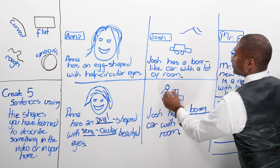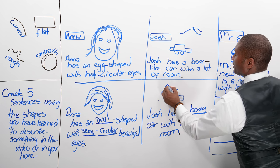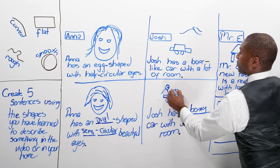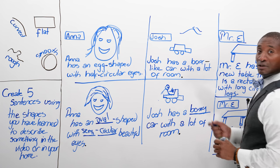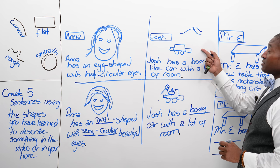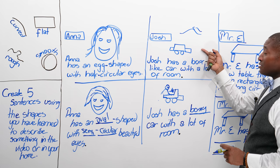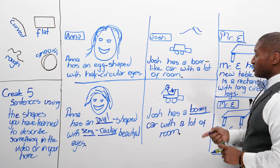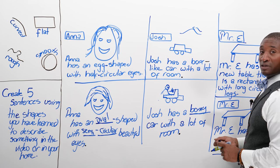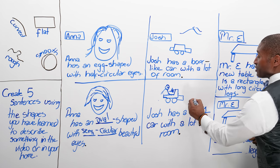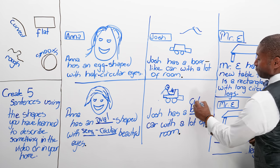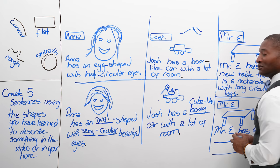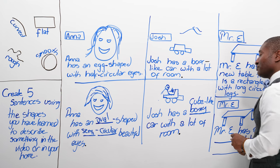It's a sexy jeep, and there's Josh with a big smile — he's got a cool car now. He's gone from this middle-aged crisis to a sexy jeep, and it's boxy. We can even say it's cube-like.